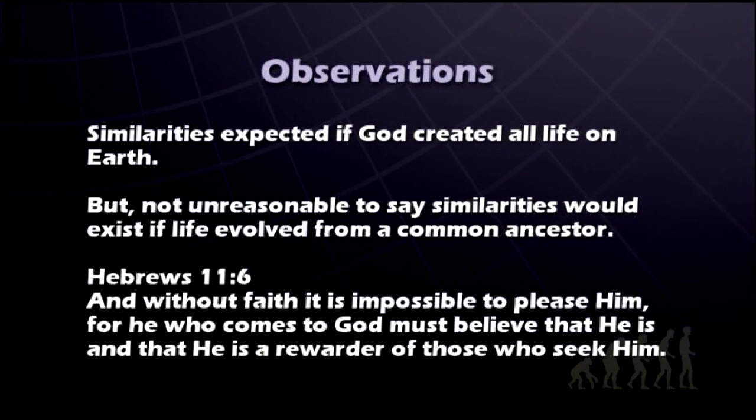Similarity is expected if God created all life on earth — it's exactly what we would expect — but it's not unreasonable to say similarities would exist if life evolved from a common ancestor. That's why we call this an ambiguous argument. Although used very frequently by evolutionists, it's not as concrete or provable to be false. It is reasonable that if animals really did turn into each other, you would see similarities — just as if tricycles really did turn into airplanes, that would be one explanation why both have wheels. That certainly doesn't mean tricycles turn into airplanes, but it would be consistent with both having wheels.